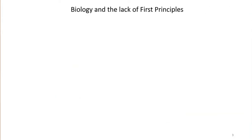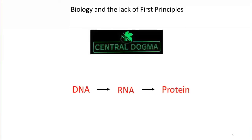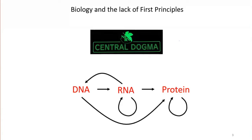I'd like this lecture to be understandable regardless of background. Some people from quantitative backgrounds prefer things based on first principles. Our current understanding of biology is a bit different from that. The closest thing to a first principle in biology is the central dogma — the idea that information flows from DNA to RNA to protein. But this almost immediately has exceptions: reverse transcriptase, RNA acting as ribozymes, microRNA, prions, and all sorts of other phenomena.